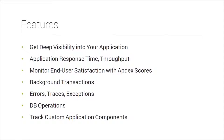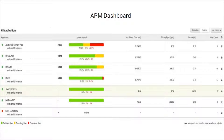Some of the key features with Site247's APM Insight include deep visibility into your application, application response time and throughput, monitoring end user satisfaction with the APDEX score, background transactions, errors, traces, database operations, and tracking custom application components. The APM dashboard shows multiple applications being monitored with APDEX score, average response time, throughput, error percentage, and fatal error count.